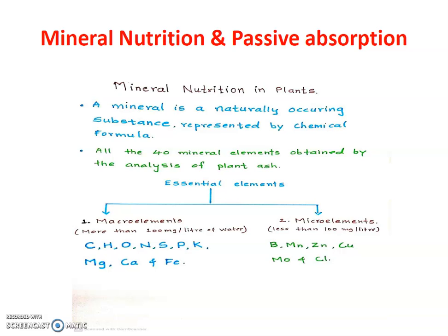From the plant ash, there are maximum 40 mineral elements obtained by scientists, and among which some are essential and some are non-essential. Essential elements means those elements which are required by plants for growth and development, while non-essentials are not required or required in a very small quantity, so they are called as non-essential.